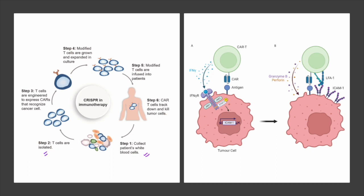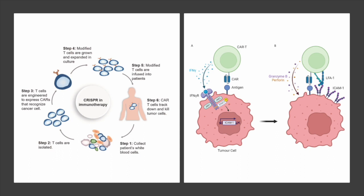CRISPR can be used in immunotherapy. For example, white blood cells or WBCs from the patient are collected; T cells are isolated and engineered to express a specific type of receptor called the Chimeric Antigen Receptor (CAR). A T cell expressing a CAR receptor can target and destroy tumor cells. These modified T cells are grown in culture and infused back into the patient; CAR-T cells can then enter tumors and destroy them. This is how CRISPR-Cas power can be used in immunotherapy.